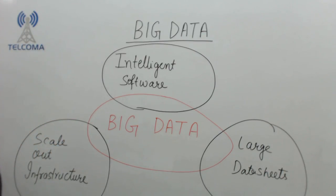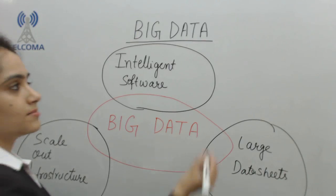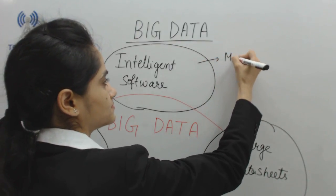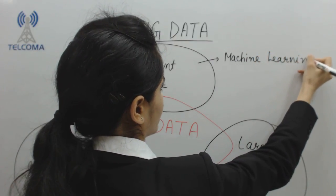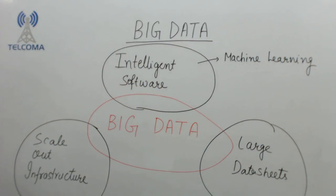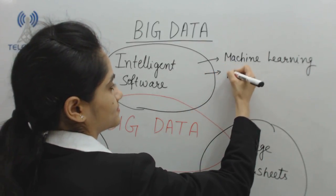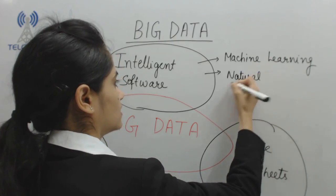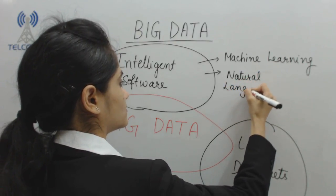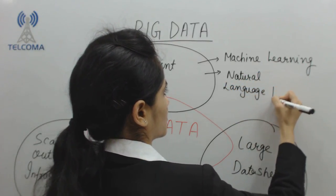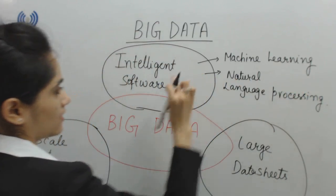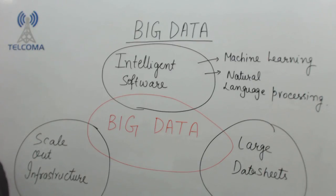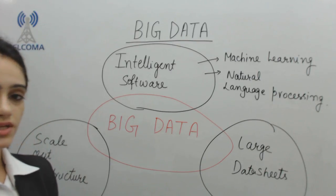Under intelligent software, we have machine learning and natural language processing as the key components.